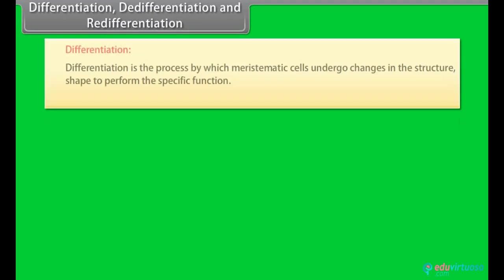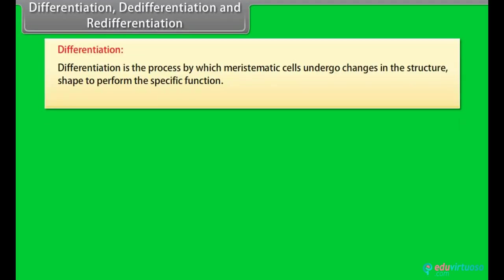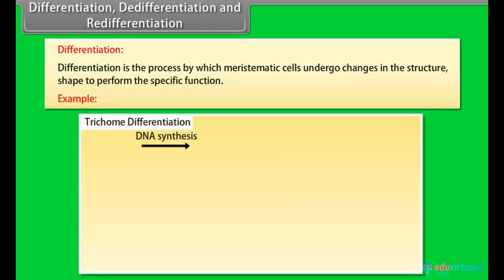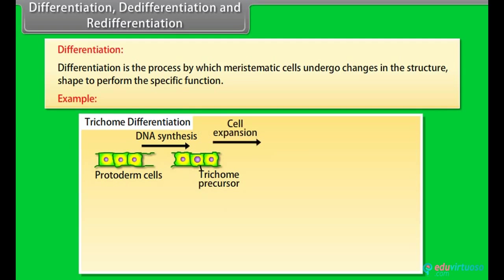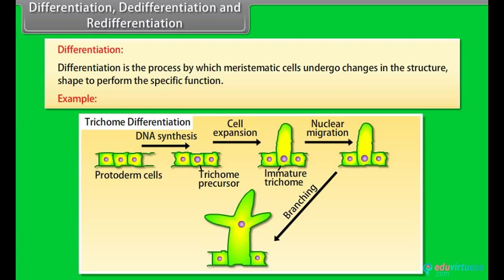Differentiation, de-differentiation, and re-differentiation. Differentiation is the process by which meristematic cells undergo changes in the structure, shape to perform the specific functions. For example, after the DNA synthesis of the protoderm cells, cell expansion takes place and it forms immature trichome. After that, nuclear migration takes place and then branching occurs and then it reaches to maturation stage.